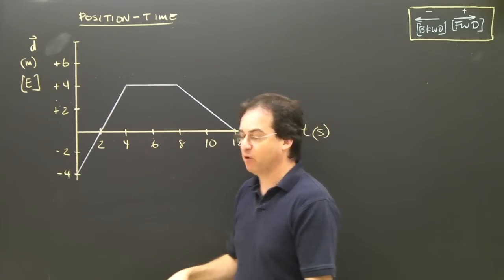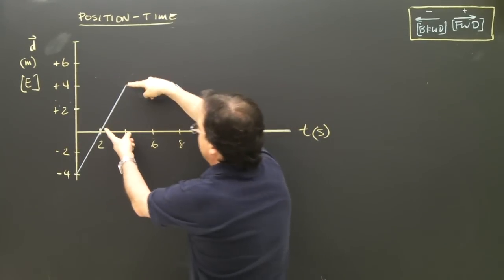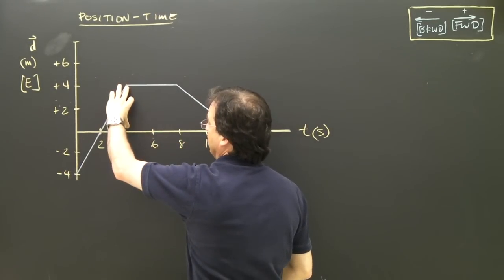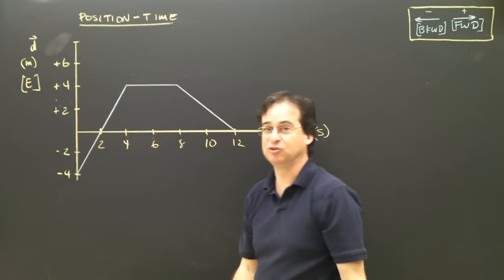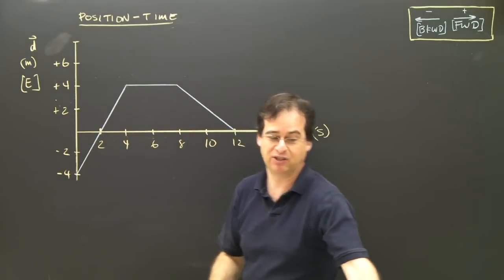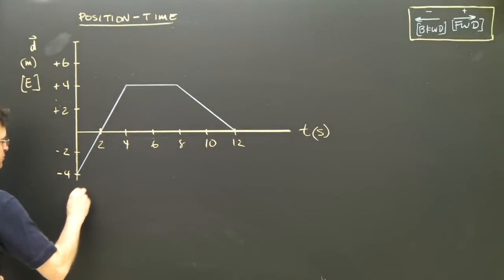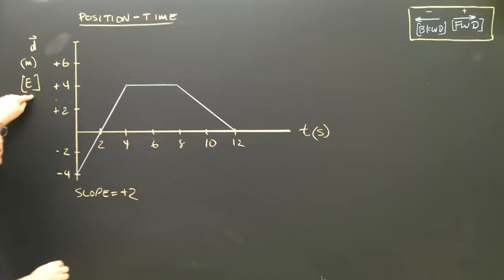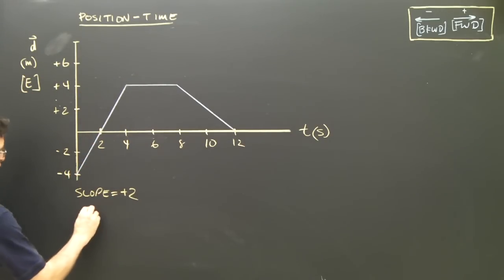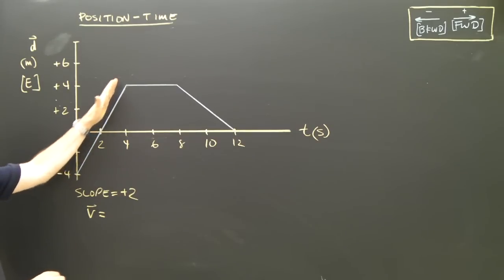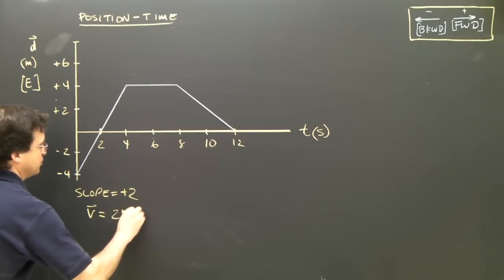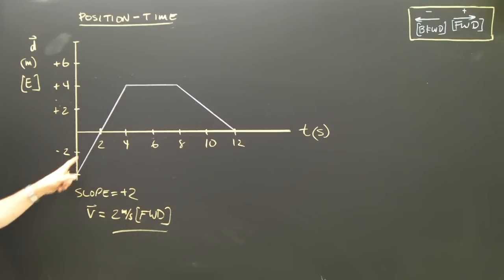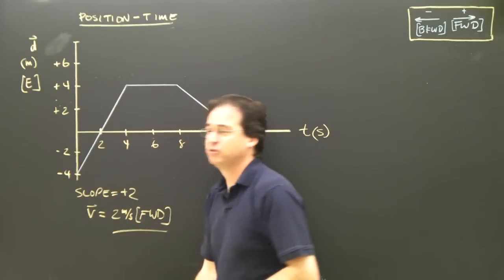Let's take a look at the slope. I can draw a triangle anywhere here. The rise was four, and the run was four minus two, which is two. So four divided by two gives me positive two. The slope equals positive two — positive means forward, which is east — and the units are meters per second. So the velocity, which is constant in this section, is two meters per second forward. This agrees with what I was saying: I started over there, then here, then over here.